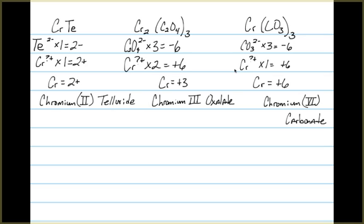We only have one of them. So our chromium must have, the one chromium atom must have the plus 6 oxidation state. And our name then would be chromium 6 carbonate.